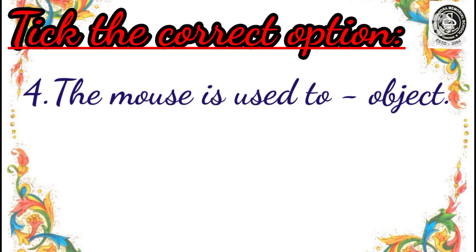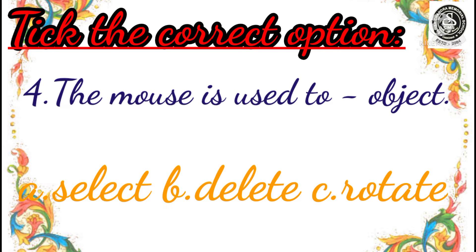Number 4: The mouse is used to dash object. Option A: select, Option B: delete, and Option C: rotate.